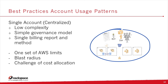The 'blast radius' — the possible risk of impact from an unintended or misconfigured change — is significantly larger when running every workload inside a single AWS account. There's also the challenge of cost allocation: untaggable resources like bandwidth mean you may be unable to do accurate cost allocation back to individual departments or projects with a single account model.